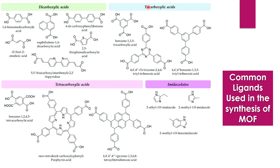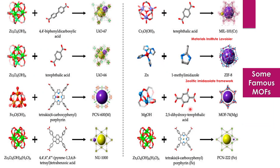Common ligand examples include benzene 1,3,5-tricarboxylic acid and benzene 1,2,4,5-tetracarboxylic acid. Nitrogen-donor ligands such as imidazoles are also common. Imidazoles consist of nitrogen-containing rings. Common ligands in MOF synthesis can thus include carboxylate-based and imidazolate-based linkers.